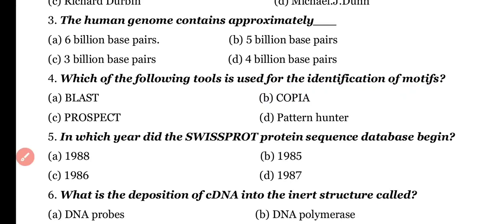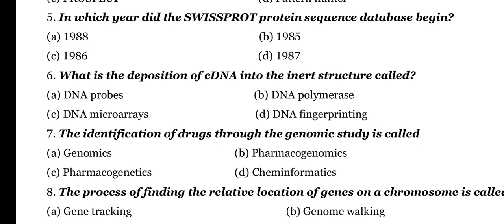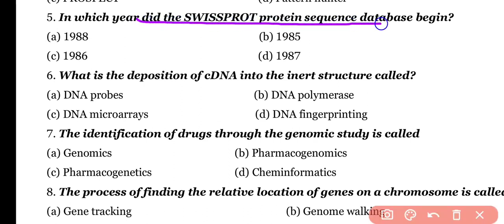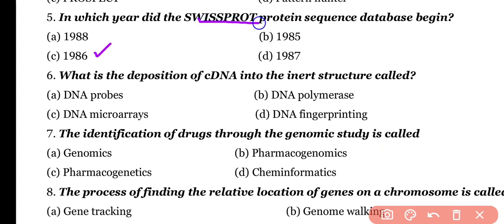Question number 5. In which year did the Swiss-Prot protein sequence database begin? Options: 1988, 1995, 1986, 1987. Correct answer is option C. The Swiss-Prot protein sequence database was begun in 1986 and was fully established in 1987.